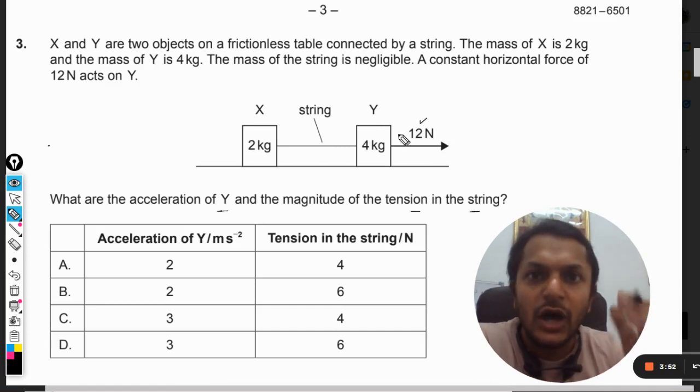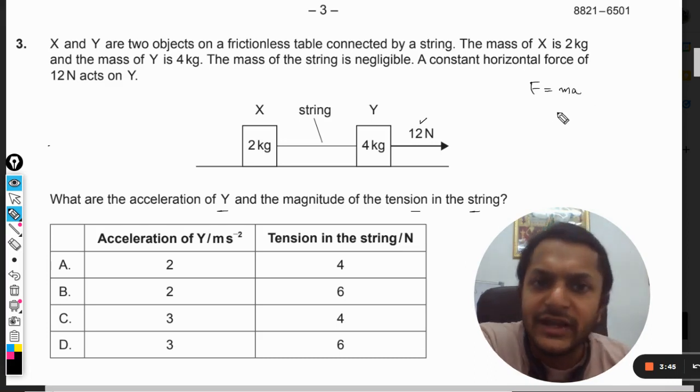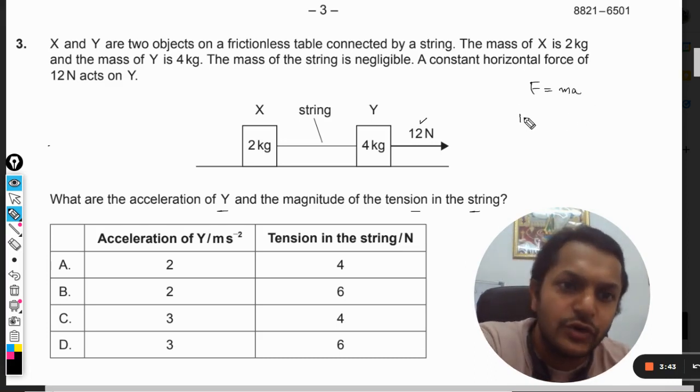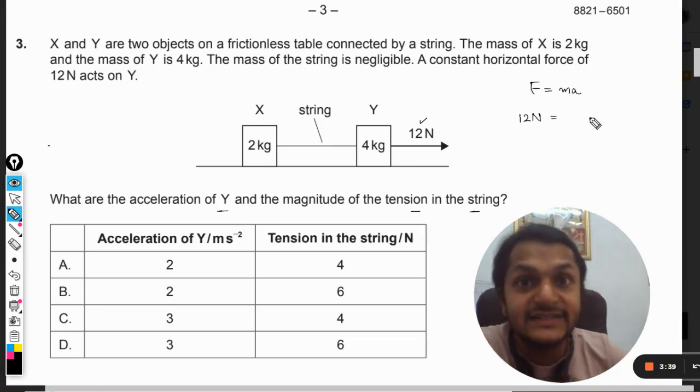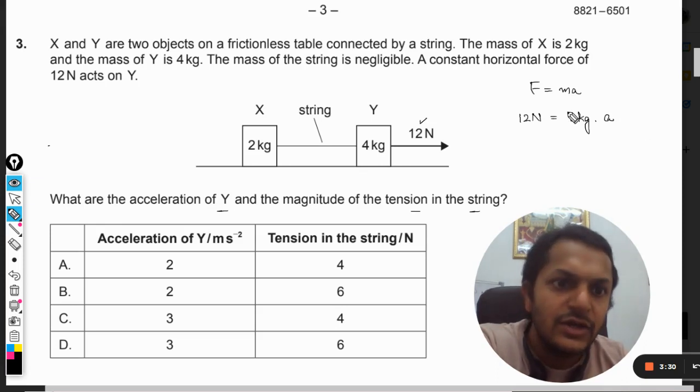So how to find the acceleration here? Simple, there is a simple formula: F is equal to m into a. So I can always say what is the total force? 12 newton. What is the total mass that is in motion because of the force 12 newton? That is 6 kgs.